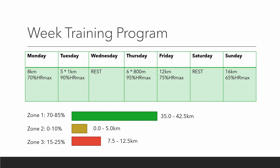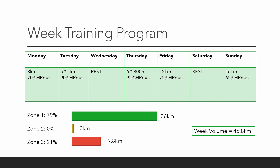Once we have the amount of distance we plan to cover and the intensity we should cover it at, we can program our training into our week. Make sure that you don't clump all your training together and that you have enough rest periods following high intensity training and long sessions. If we recalculate how much of our training is in each zone — sum up the planned weekly volume, then sum up how much was done in each zone, divide the volume in each zone by the total volume and multiply by 100 — in this example 79% of our training is in zone 1, 0% in zone 2, and 21% in zone 3. This fits a polarised training model.